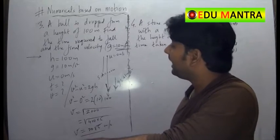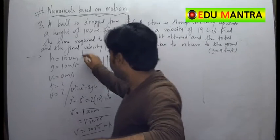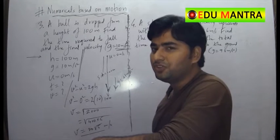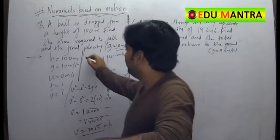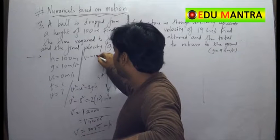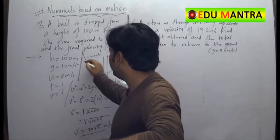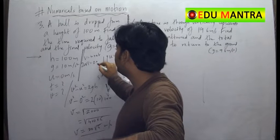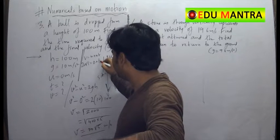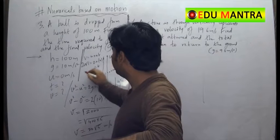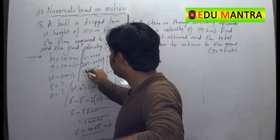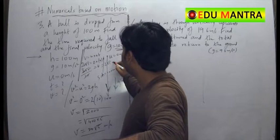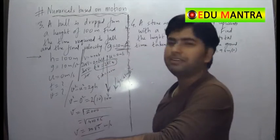We also need to find the time. Using the formula v = u + at: v is 20√5, u is 0, and a is 10, so 20√5 = 10t. Therefore t = 20√5 / 10 = 2√5 seconds. The time is 2√5 seconds.